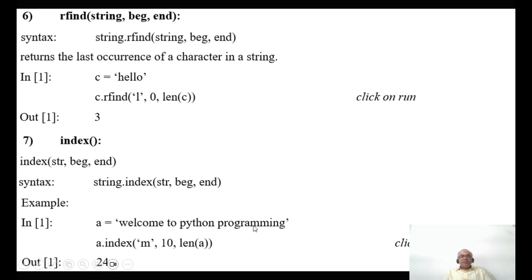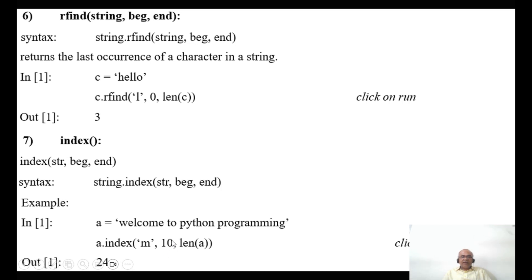How do we know it's 24? Because we have two m's in the string, one at index 5 and one at index 24. There's also an 'm' at index 5, but since we are starting from index 10 as the beginning, it won't consider the 'm' at index 5 at all.